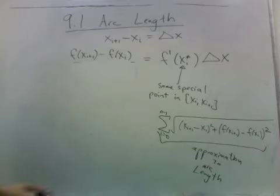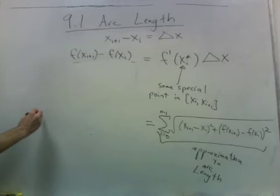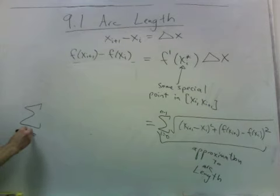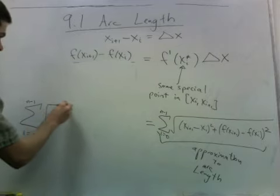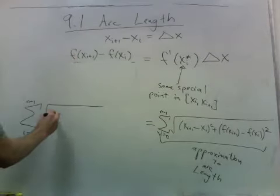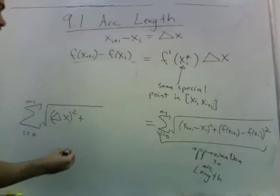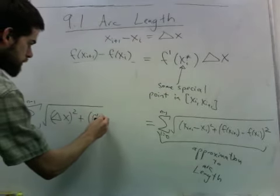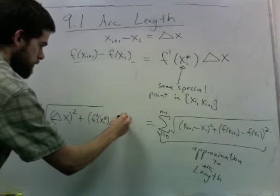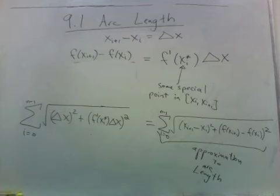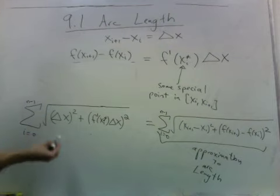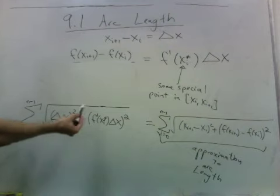We have the sum of i equals 0 to n minus 1. And here I have delta x squared plus this thing squared. And, well, both of these contain a delta x squared, which I can factor out and then take the square root of it.